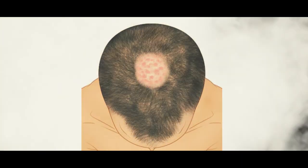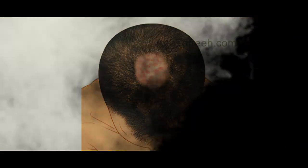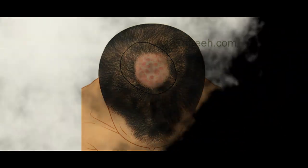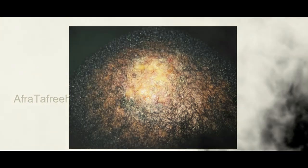An extremely high-yield presentation of tinea capitis that very frequently appears on examinations is the kerion. In the kerion variant, the patient presents with a large erythematous, inflammatory, boggy mass that classically appears on the vertex scalp, as seen in the clinical photograph and schematic provided here.